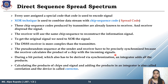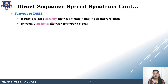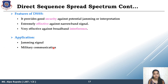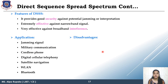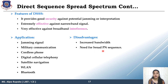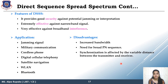So this is all about DSSS. The features of DSSS: it is very secure, very effective against narrowband signals, and very effective against interference. We also use it for jamming signals, military communication, cordless phones, digital cellular telephony, satellite navigation, WLAN, and Bluetooth. The disadvantage is that it increases your bandwidth — a single bit is transmitted as multiple bits according to your chipping sequence length, so the bandwidth requirement is increased in DSSS. Second, the circuit is very complex when a broad PN sequence is required for higher security. Synchronization is also very difficult at both transmitter and receiver.